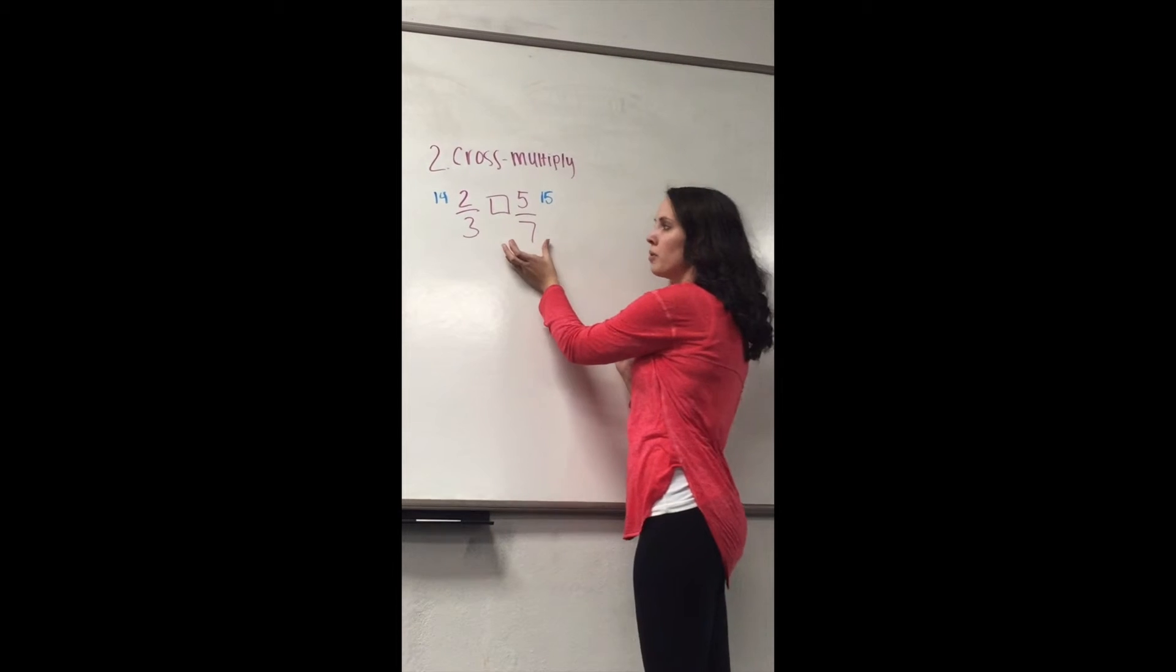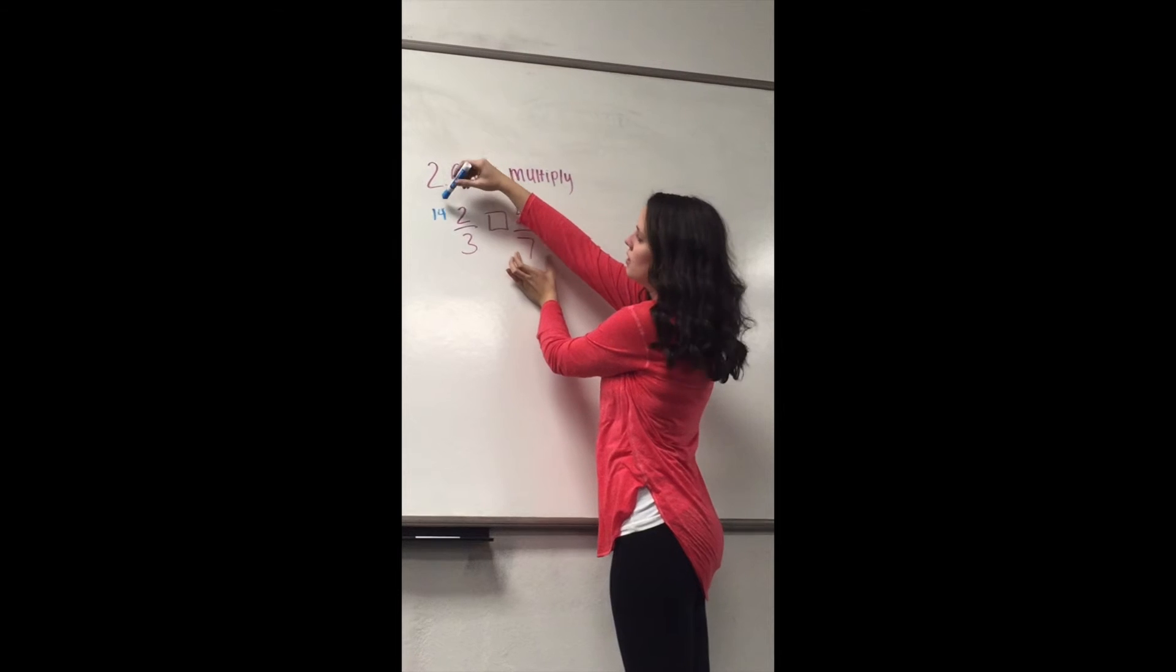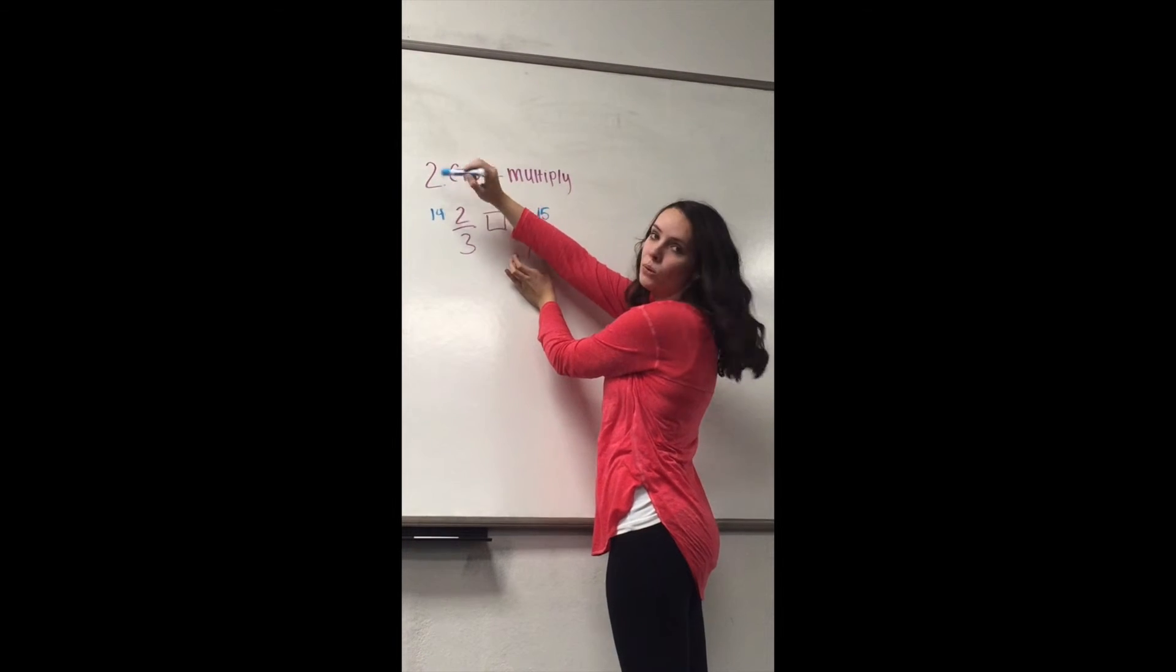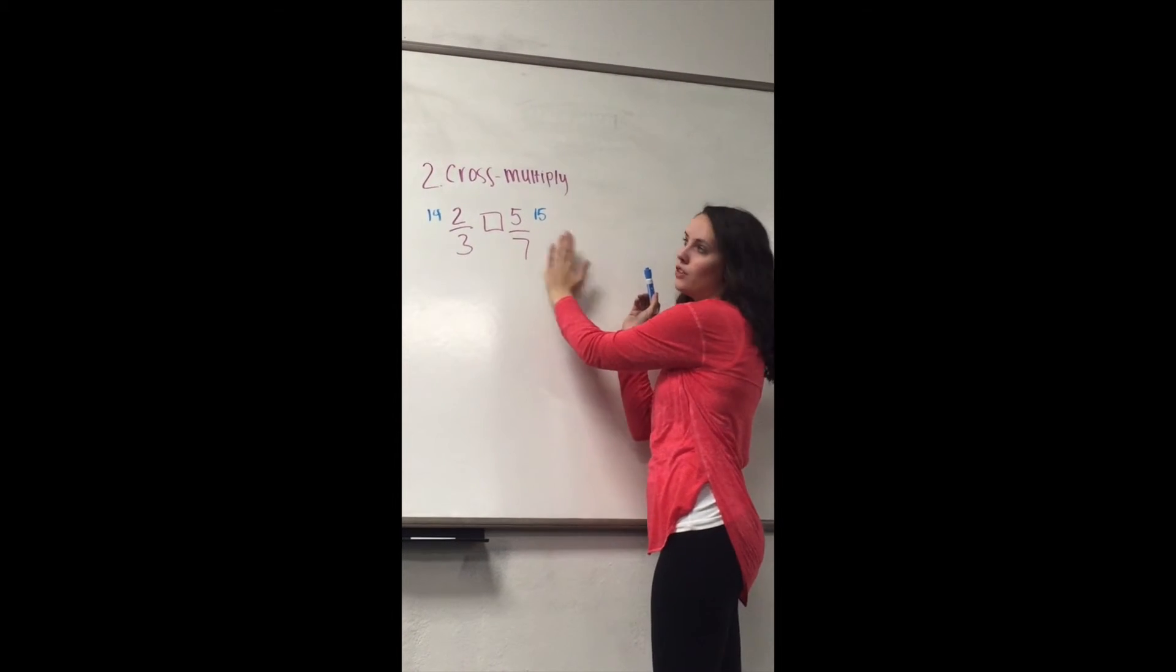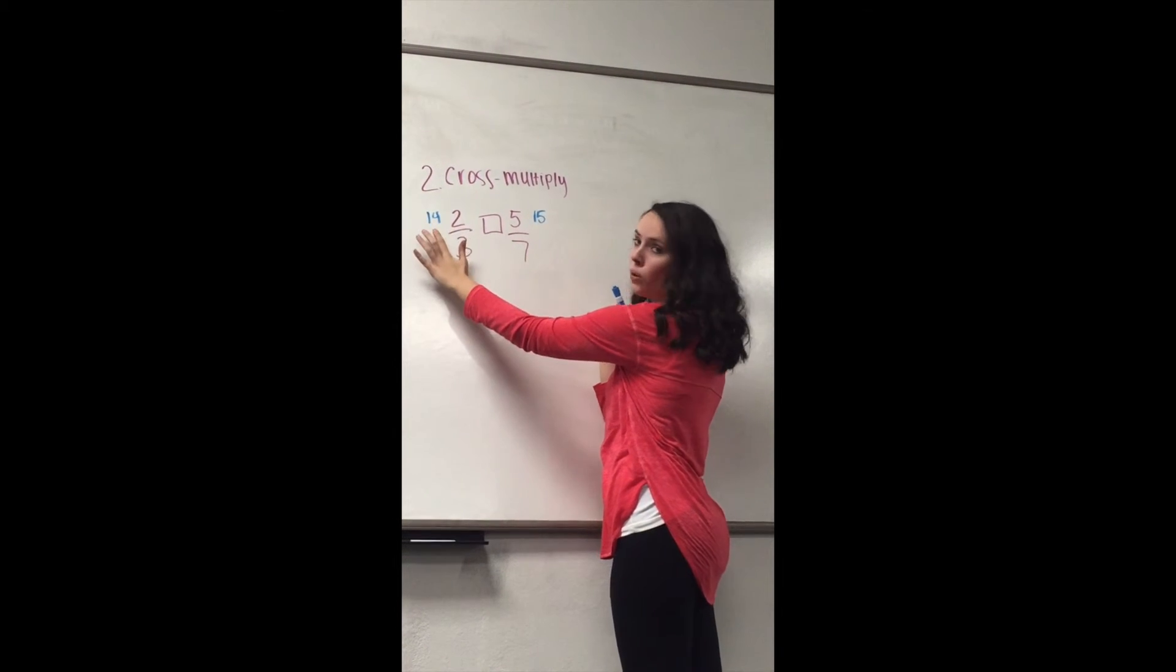And you need to make sure that you're multiplying from the bottom up. So 7 cross over times 2, 14. And make sure you're writing 14 on this side, because if you write it on this side, if you do 2 times 7 and write it over here, you're going to get the wrong answer. So 7 times 2 is 14.